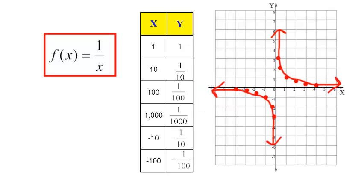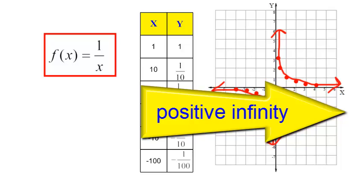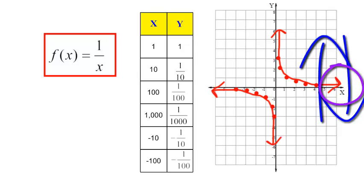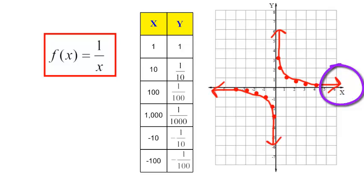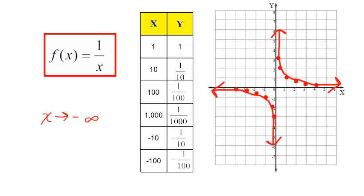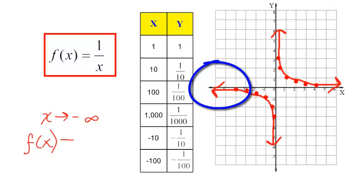As my x's are approaching positive infinity — getting bigger and bigger — my y's, which is f of x, are approaching 0. The graph is not going up or down; it's just leveling off at 0. As my x's are approaching negative infinity, that means going to the left. When that's happening, my graph is also just leveling off right at 0.